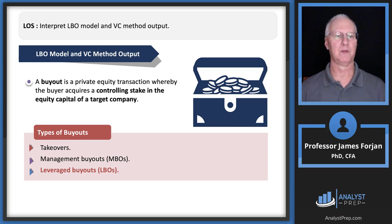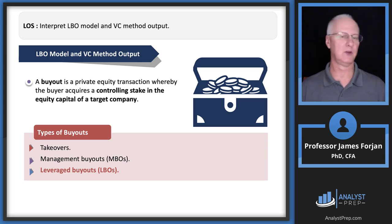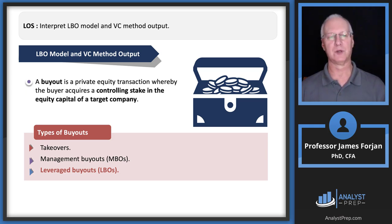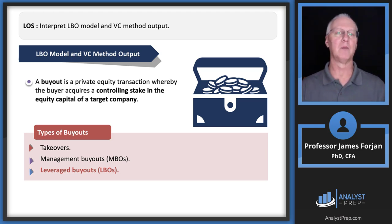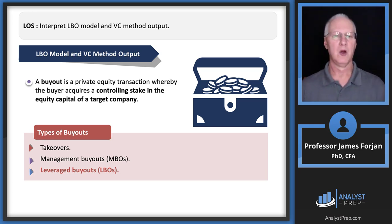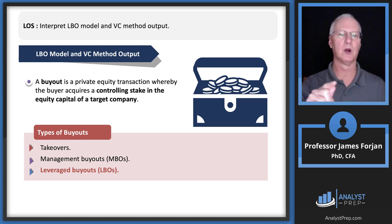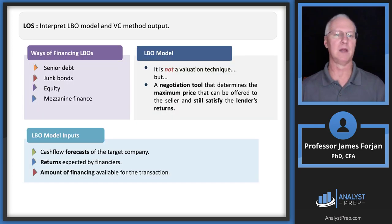Types of buyouts include: taking over another company; management buyouts where management buys itself out; and leveraged buyouts, which are mostly what we discuss from a private equity standpoint. Note the key point: a controlling stake in the equity capital. A private equity firm can buy 1%, 10%, 51%, or 100% of a company — look for whether it's a controlling stake in the question stem, as that may influence your answers.